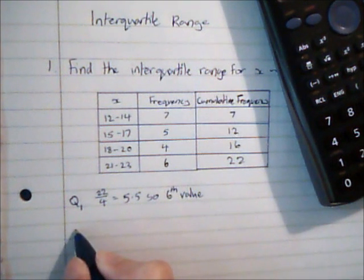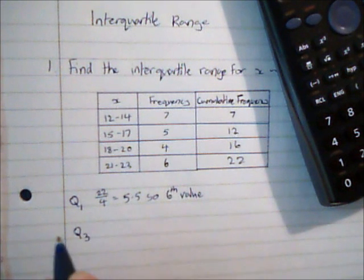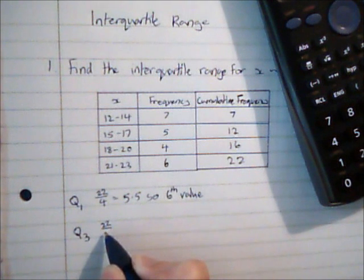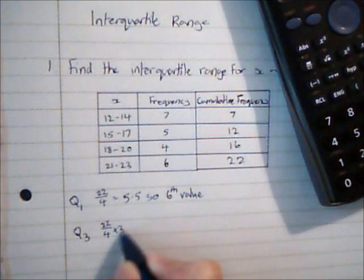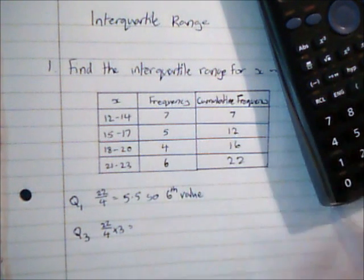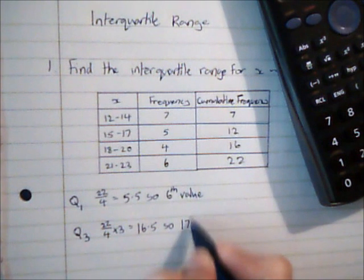So then Q2, so Q2 would be the median, so we don't need that. Q3 we need, so the upper quartile. And that's going to be at 22 divided by 4 multiplied by 3, which is going to be 16.5, which indicates it's the 17th value that we want.